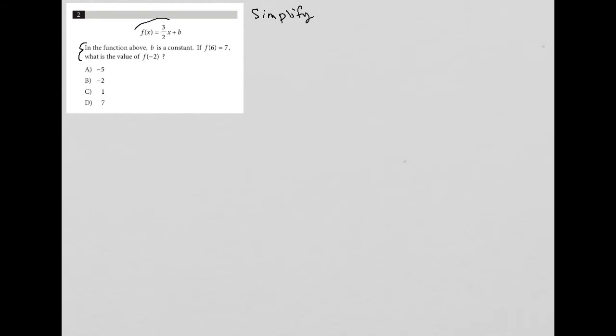First of all, we notice that they give us this function here: f(x) equals three halves x plus b. I want you to keep in mind that f(x) is the same as y. So we could write that as y equals three halves x plus b. I'm not saying you should do that, just keep in mind that this is true in case it becomes valuable later on.